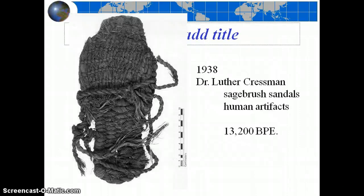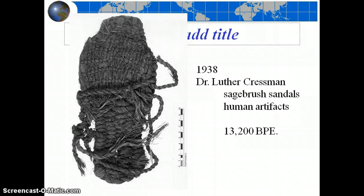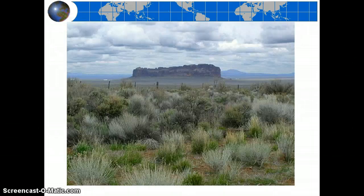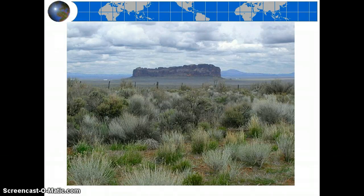So let's jump to Oregon, and in the 1930s, Dr. Cressman found artifacts, these sandals, that from radiocarbon dating was identified to be about 13,000 years old, and they were sandals that were believed to have been worn in a very wet environment, and yet the environment that that was found in looks like this. This is Fort Rock Basin.